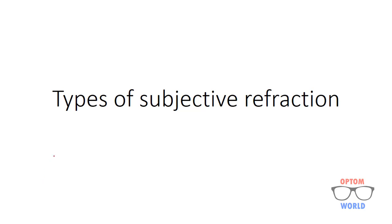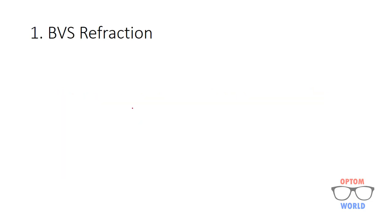Hello everyone. Today we will discuss briefly types of subjective refraction. There are three types of subjective refraction. Number one is BVS refraction. BVS means best vision sphere.